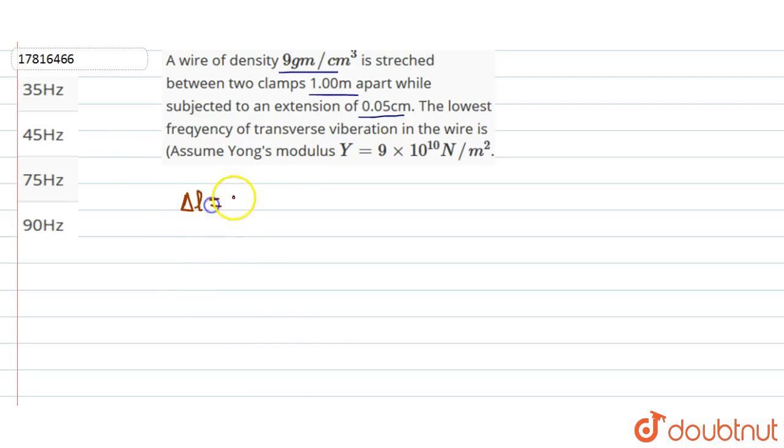Delta L is F L by A Y. Delta L by L is F by A Y. Pressure by Young's modulus. What will force be? Tension into L by A Y. Tension is equal to Young's modulus into area into delta L upon L.